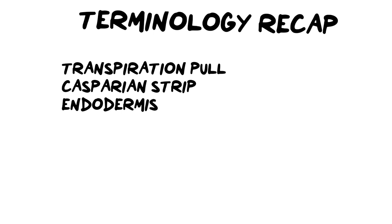To sum up, there are three key words in this video. Number one: transpiration pull — the force facilitating water movement through the roots, sucking water out of the soil, through the cortex, through the endodermis, and into the xylem, then up to the leaves where water is lost. Number two: the Casparian strip — a waterproof layer on the outside of endodermal cells that ensures water moving along the cell wall is redirected into the cytoplasm so it can be put into the xylem.